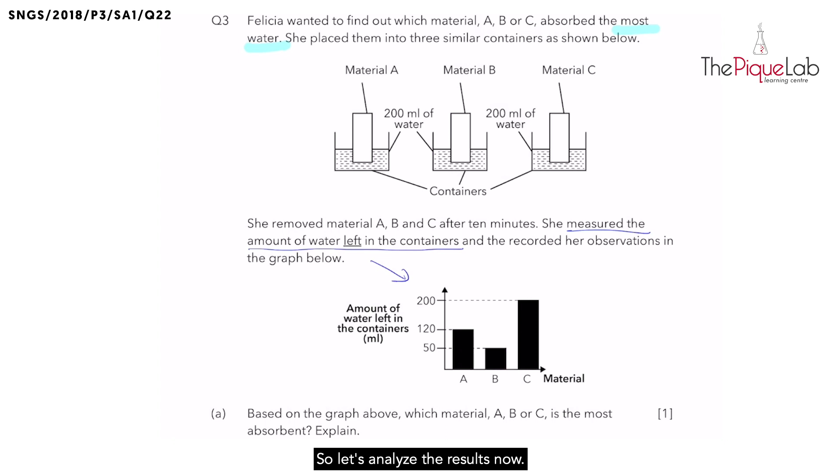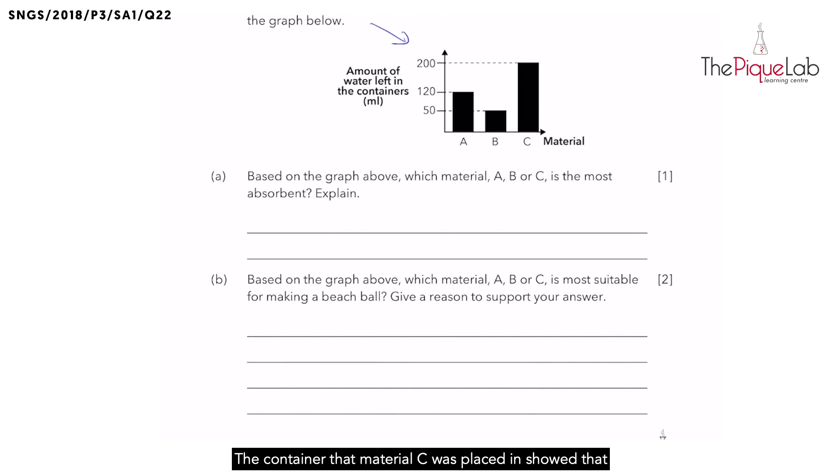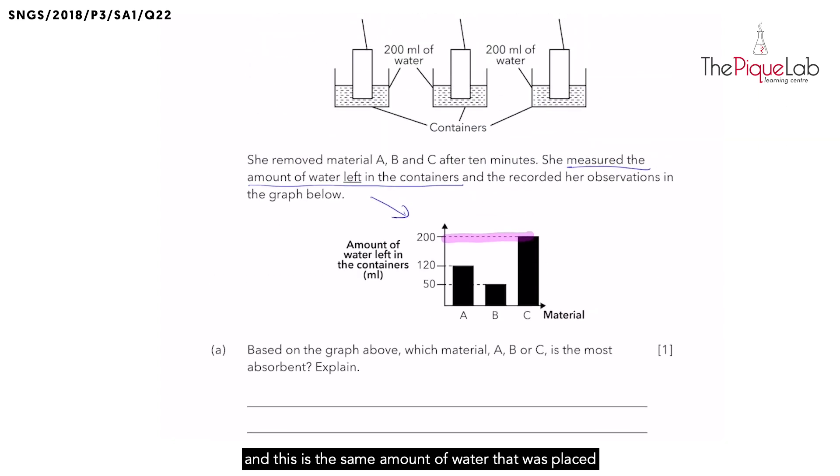So let's analyze the results now. The container that material C was placed in showed that it had the most amount of water left inside the container. And in fact, the amount of water left is 200 ml. And this is the same amount of water that was placed in the container before the start of the experiment. So let's write it down. Same amount of water left.